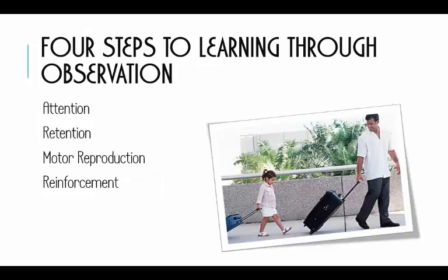Bandura said there are variables we have to adhere to before observational learning will happen. First, if we don't pay attention, don't expect observational learning — you didn't get the data to begin with. Second, you also have to be able to remember and retain the information. Third, and this is a big one — can you physically produce what you learned? I can watch Olympic athletes compete and remember what they did, but I don't have a body trained to do what they do. So I can't truly learn through observation if I can't replicate that behavior on my own.